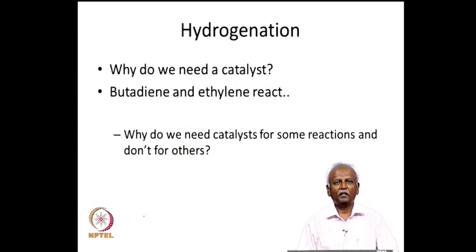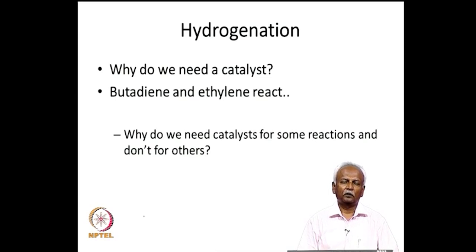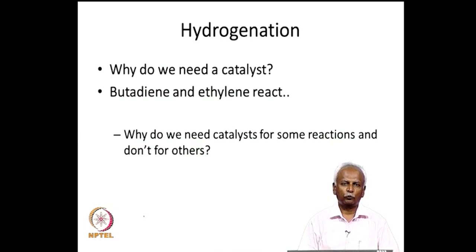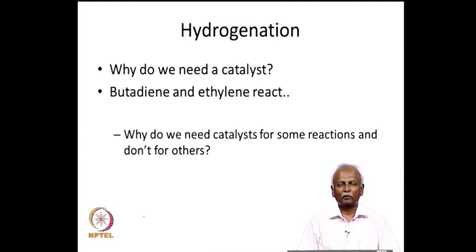Why do we really need a catalyst for hydrogenation? Consider, for example, the reaction of butadiene and ethylene reacting together — that is the classic 4+2 cycloaddition reaction. You do not seem to require a catalyst, and in fact there are several reactions which proceed under fairly normal conditions. But hydrogenation is one reaction that will not proceed unless we have a catalyst, and usually this is a transition metal catalyst.